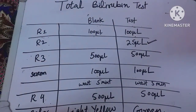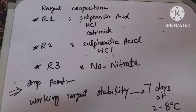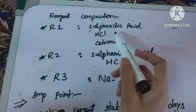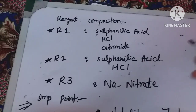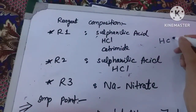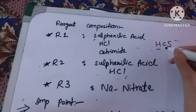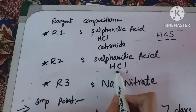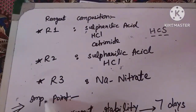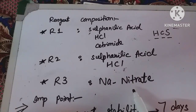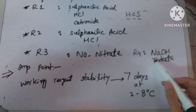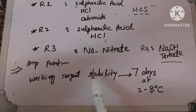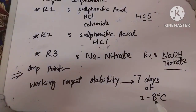Regarding the composition of bilirubin total reagents — important for exam purposes: R1 is sulfanilic acid, HCl, and citramide (you can remember it as SCS: sulfanilic acid, citramide, HCl). R2 is also sulfanilic acid and HCl but without citramide. R3 is sodium nitrate. R4 is sodium hydroxide plus tartrate.